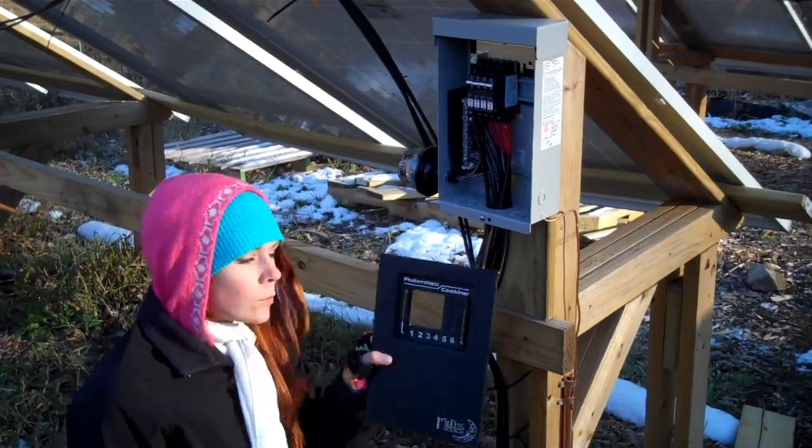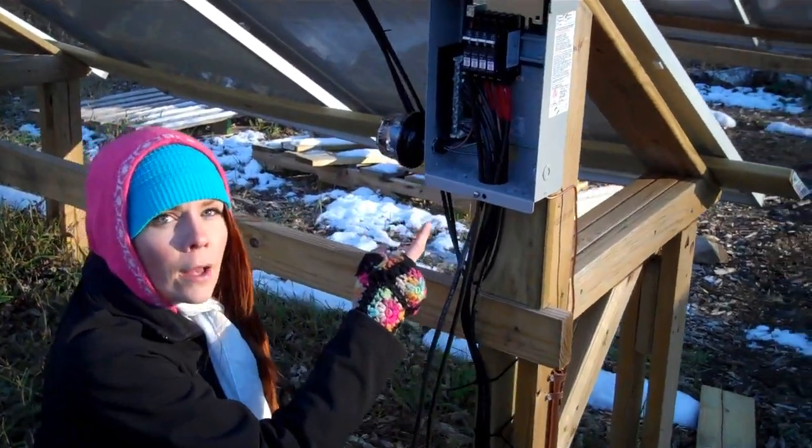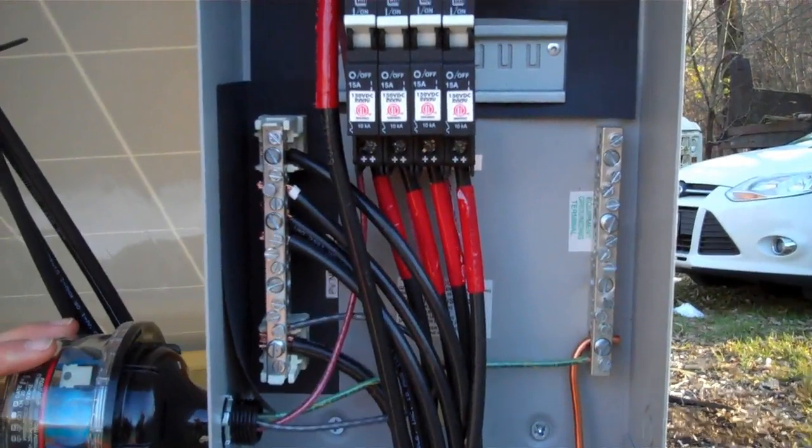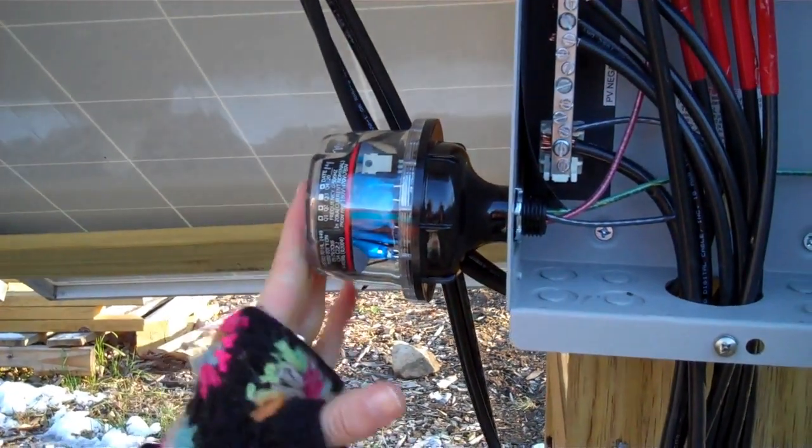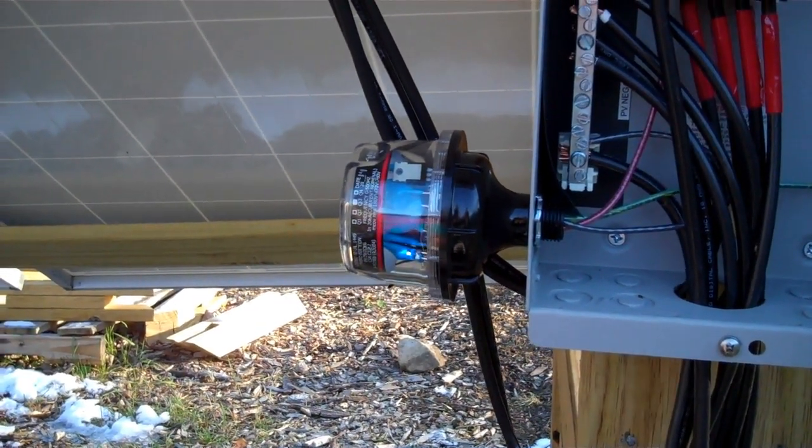Okay, so I've removed the actual plastic cover to the combiner box so we can take a closer look at how things are connected inside. First off, we do have a lightning arrestor attached to our combiner box. And this just serves as some extra protection should a lightning bolt strike nearby. It's definitely not going to save anything if your panels are directly struck, but if there's any overflow from nearby strikes, then this should help out with that.